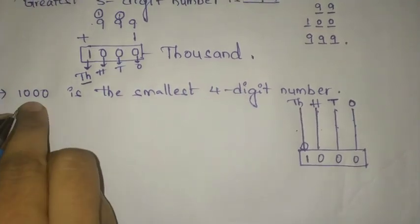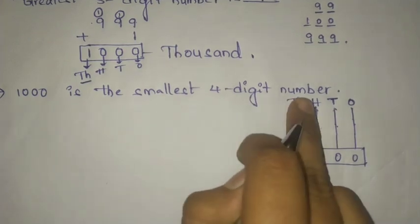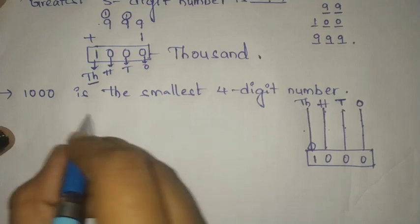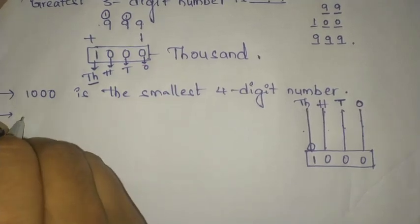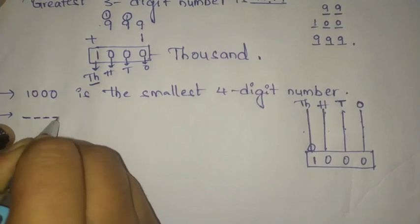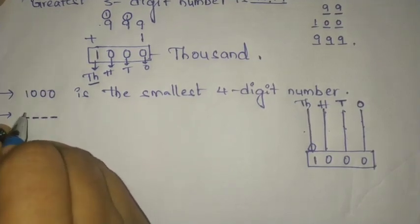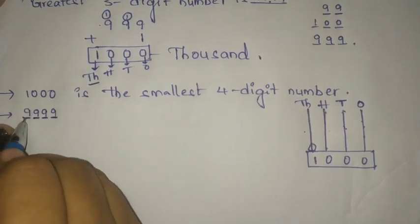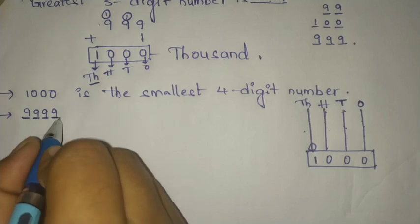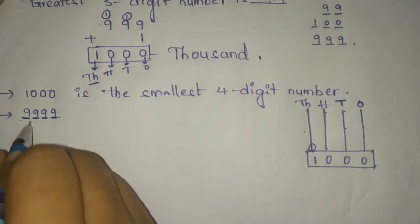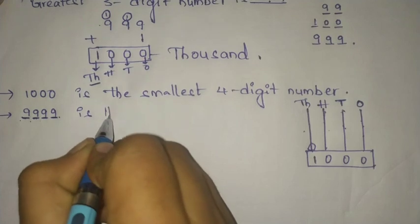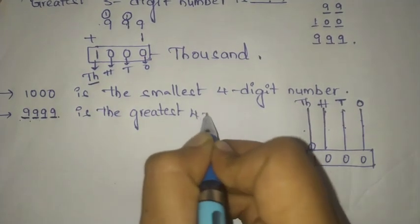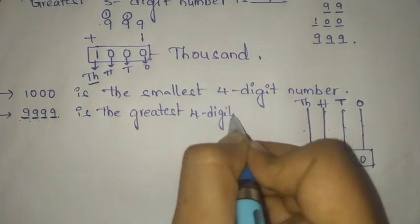Look here. 1000 is the smallest four digit number. Then what is the greatest four digit number? To write the greatest four digit number, we take four digits and since greatest means all nines, it is 9999. 9999 is the greatest four digit number.